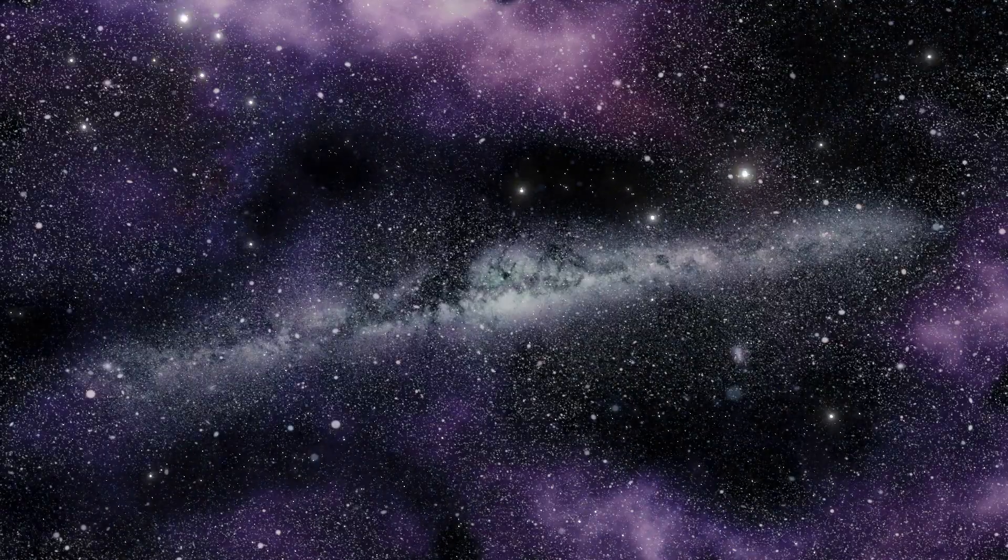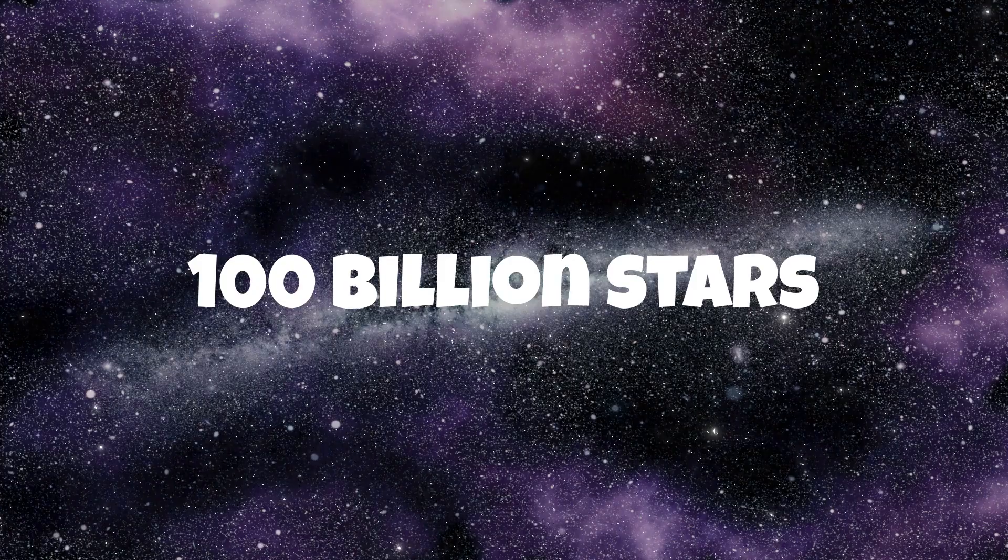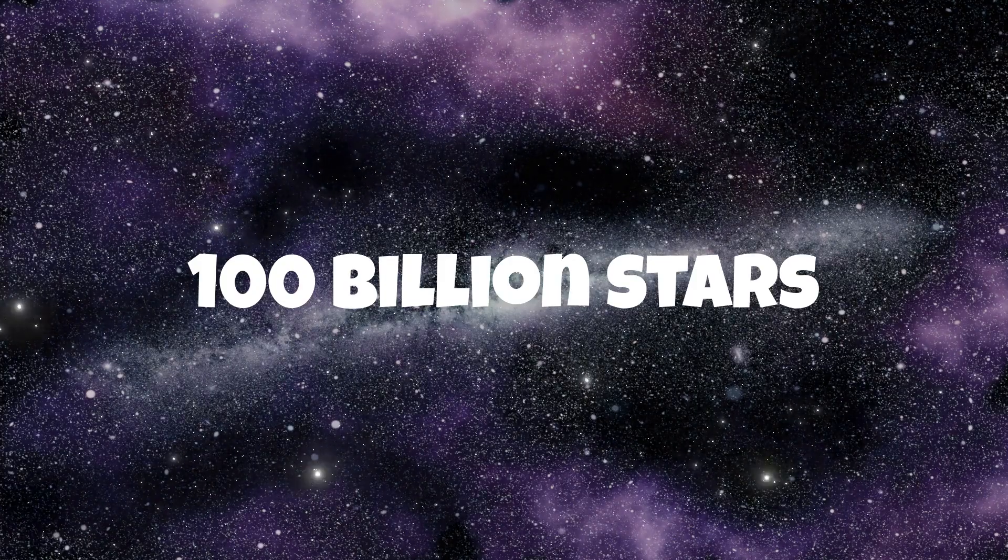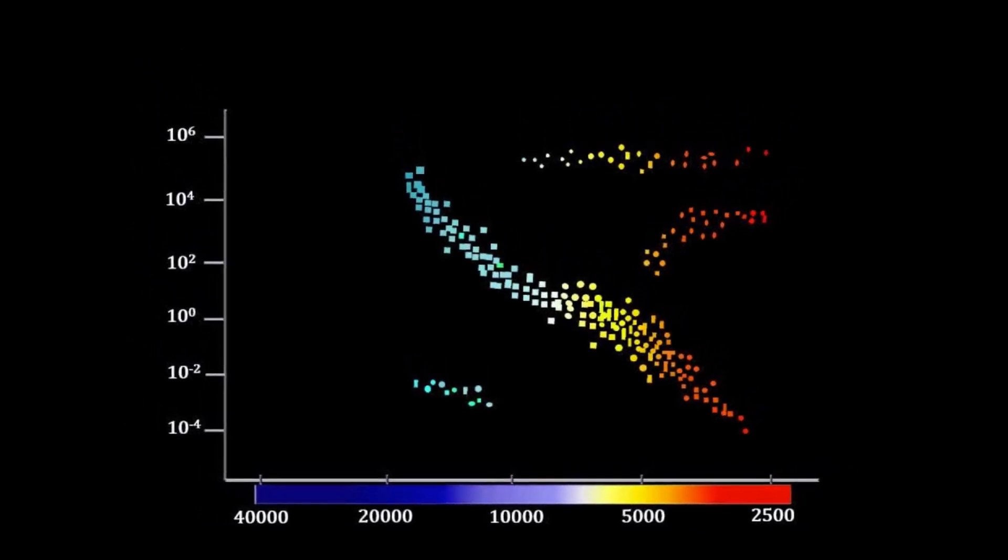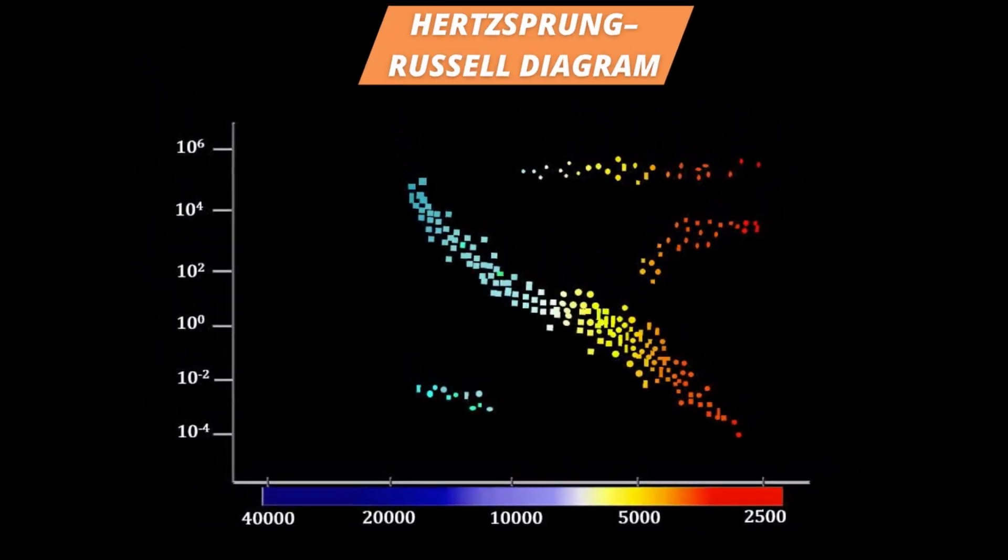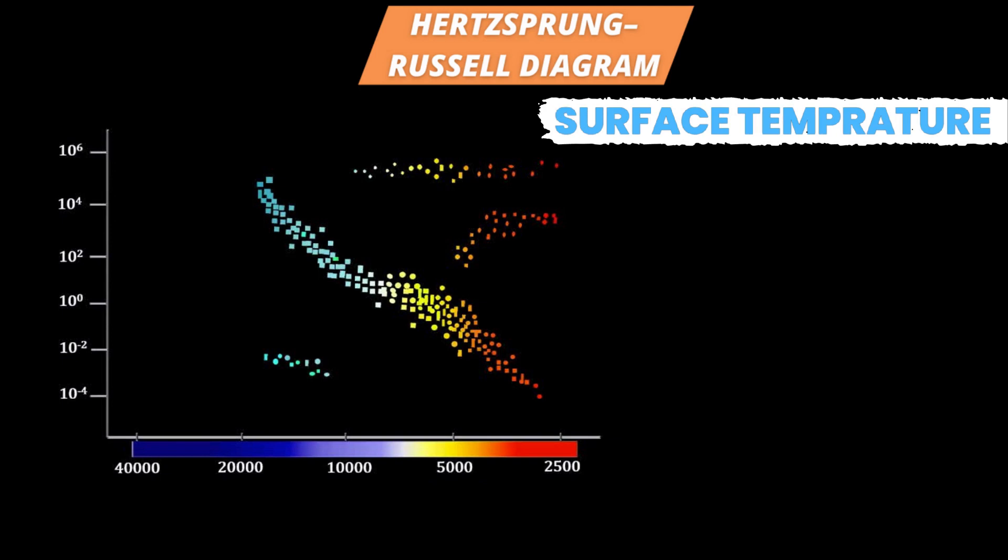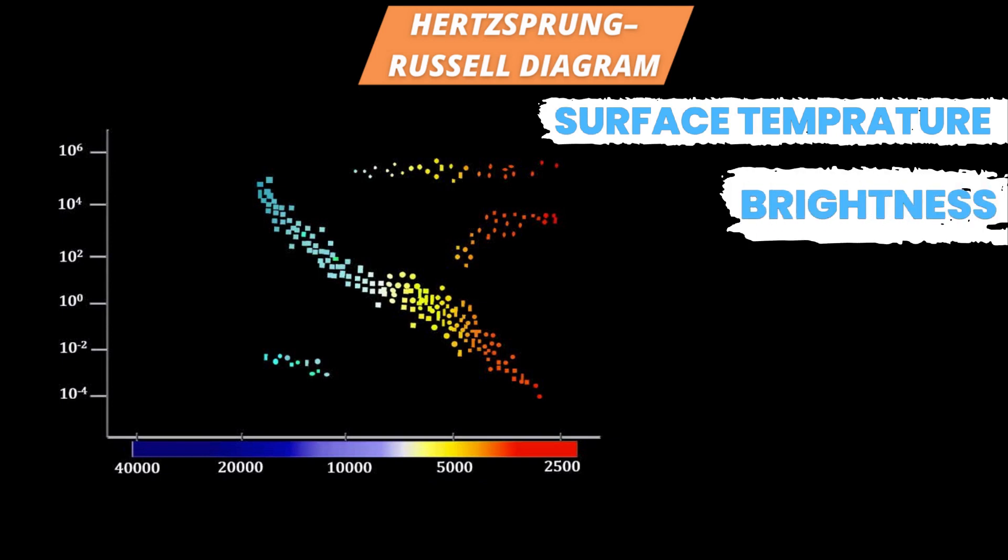But there are so many stars in the universe. In fact, our galaxy alone has 100 billion stars. So how do scientists classify them? Scientists use the Hertzsprung-Russell diagram to classify stars based on their surface temperature and brightness and compare them with other stars.